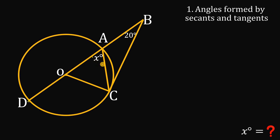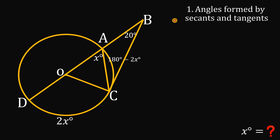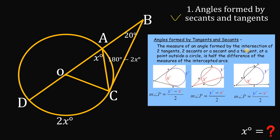We know angle X is the inscribed angle at A. Using the inscribed angle theorem, arc DC equals twice angle X, which is 2X degrees. Since AD is a diameter, arc ACD measures 180 degrees. So arc AC equals 180 degrees minus 2X degrees. Now we apply the theorem: the measure of an angle formed by the intersection of two tangents, two secants, or a secant and a tangent at a point outside a circle equals half the difference of the intercepted arcs — the larger arc minus the smaller arc, divided by 2.